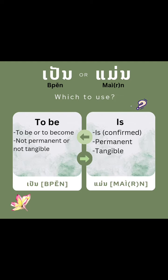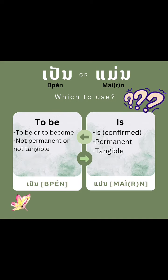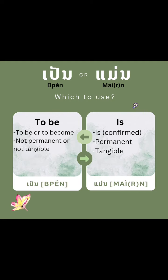They both can be used as the verb 'to be', but in certain situations one is more appropriate than the other to use, and in some situations one cannot be used at all. Ben is more flexible and can usually be used in most situations. It means to be something permanent, something semi-permanent, and even something intangible.